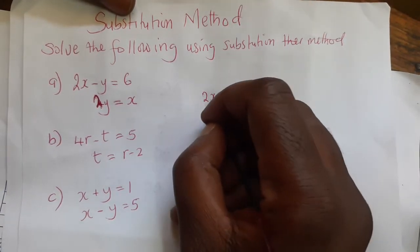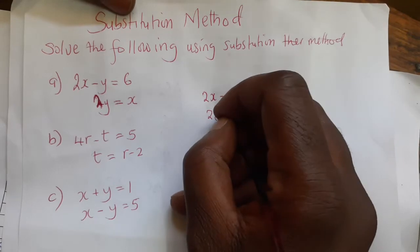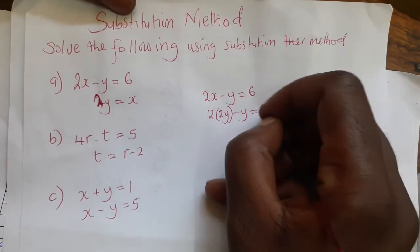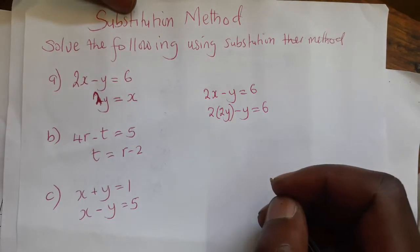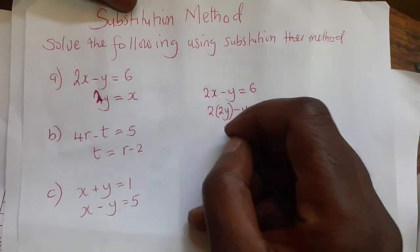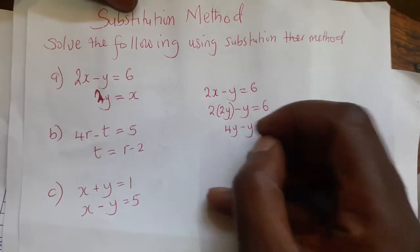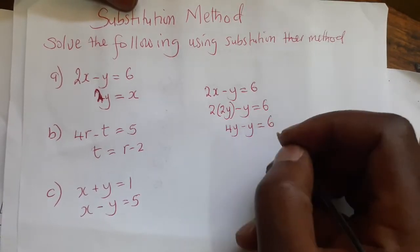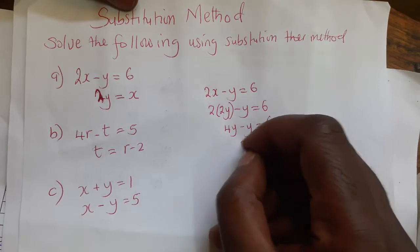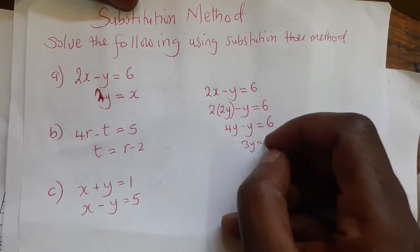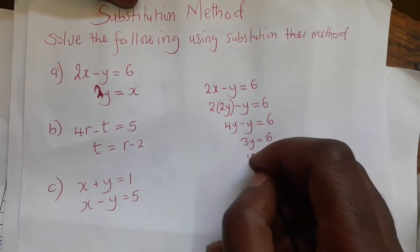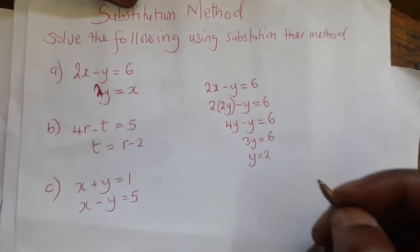So we are going to say 2(2y) minus y equals 6. That gives us 4y minus y equals 6. Then we get 3y equals 6, so we divide both sides by 3.